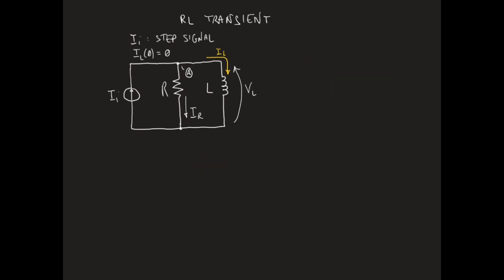What we got is a linear first-order non-homogeneous differential equation in IL. The value of IL at zero is called the initial condition. The solution of this equation tells us how the current IL flowing through the inductor changes in time when a step signal is applied to the circuit.